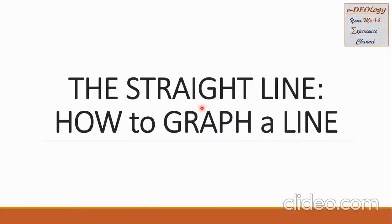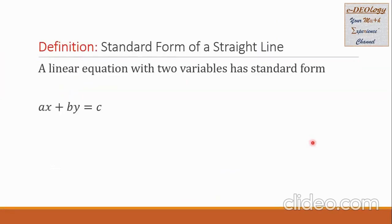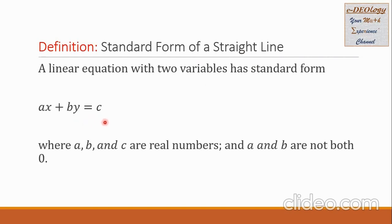Hi everyone. Today we're going to study how to graph a line. Let us define the standard form of a straight line. A linear equation with two variables has standard form AX plus BY equals C, where A, B, and C are real numbers and A and B are not both zero.